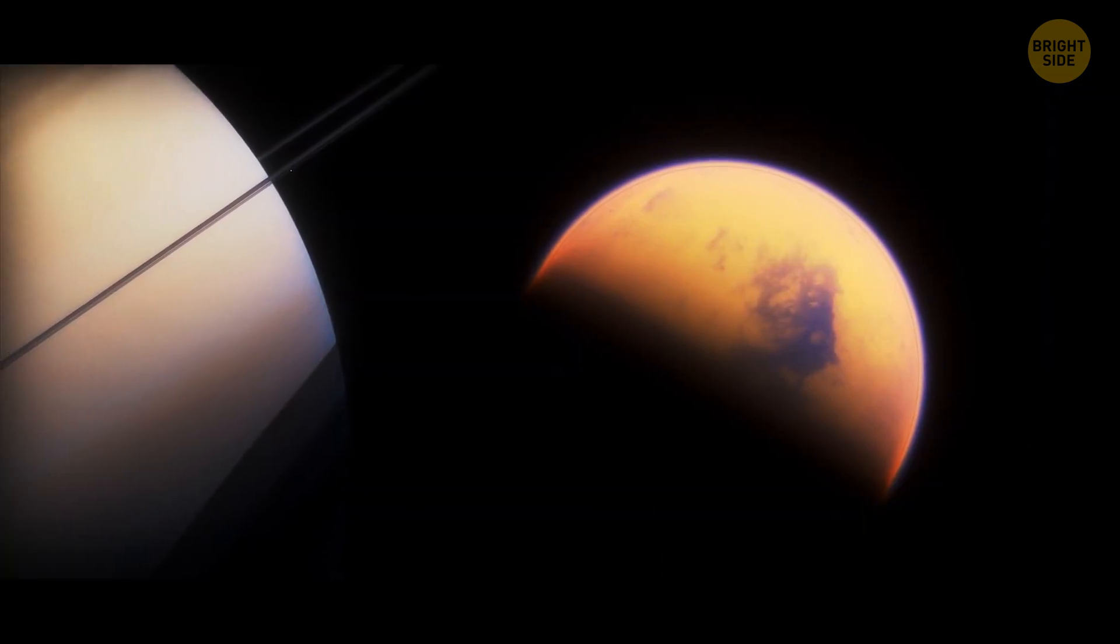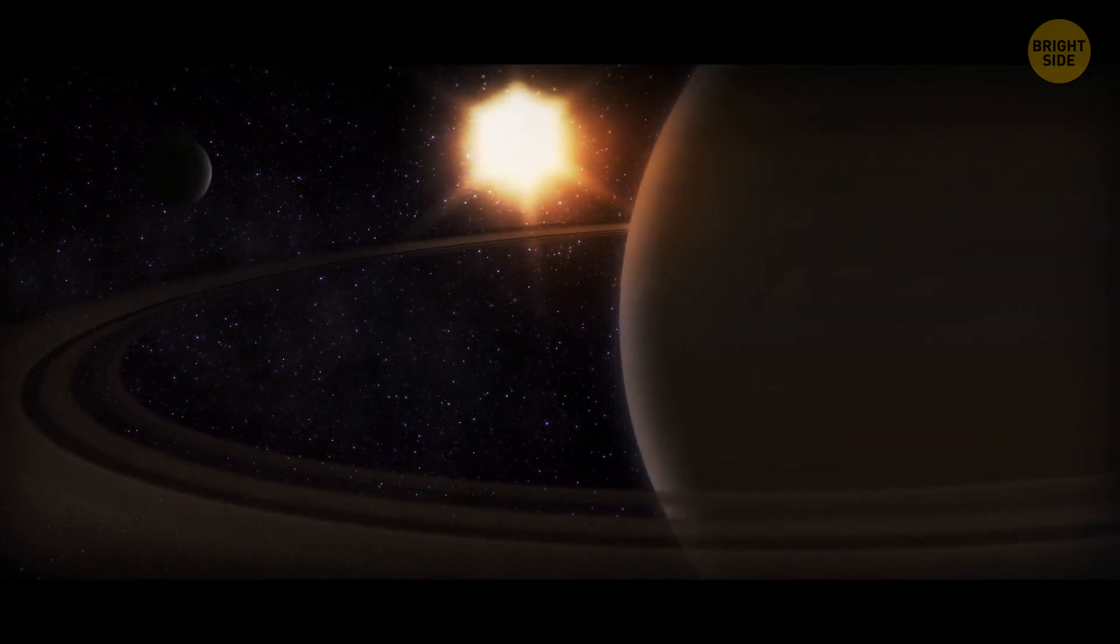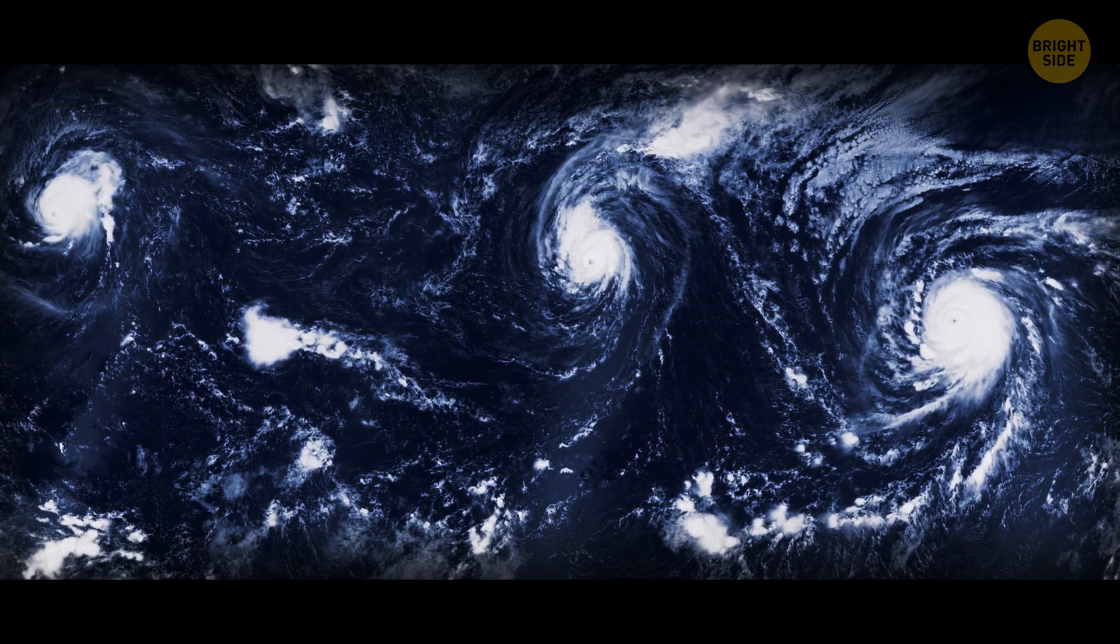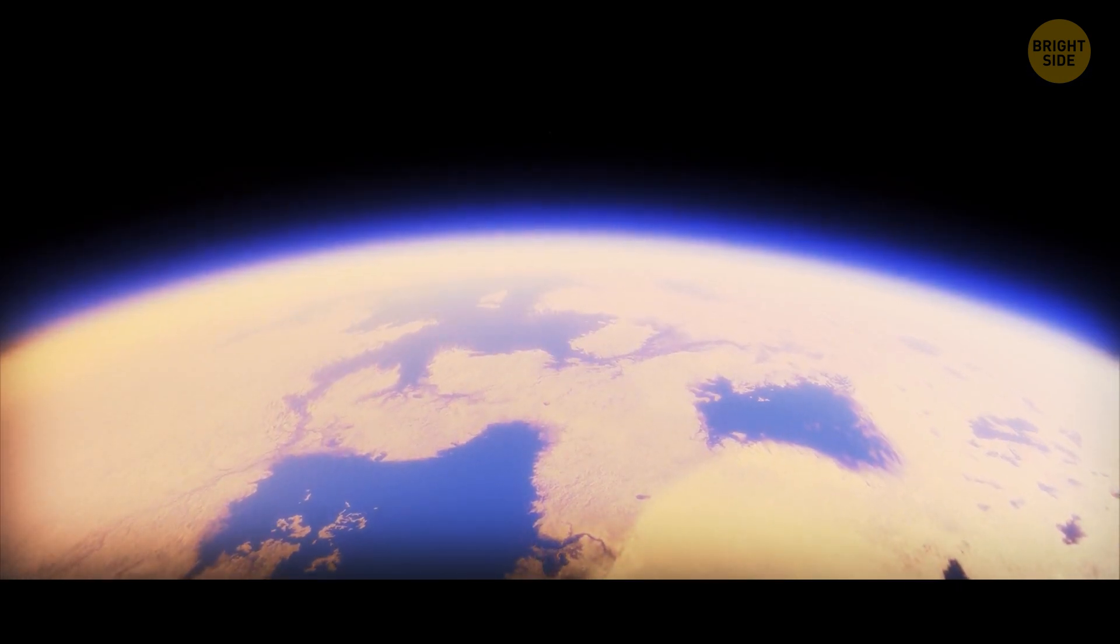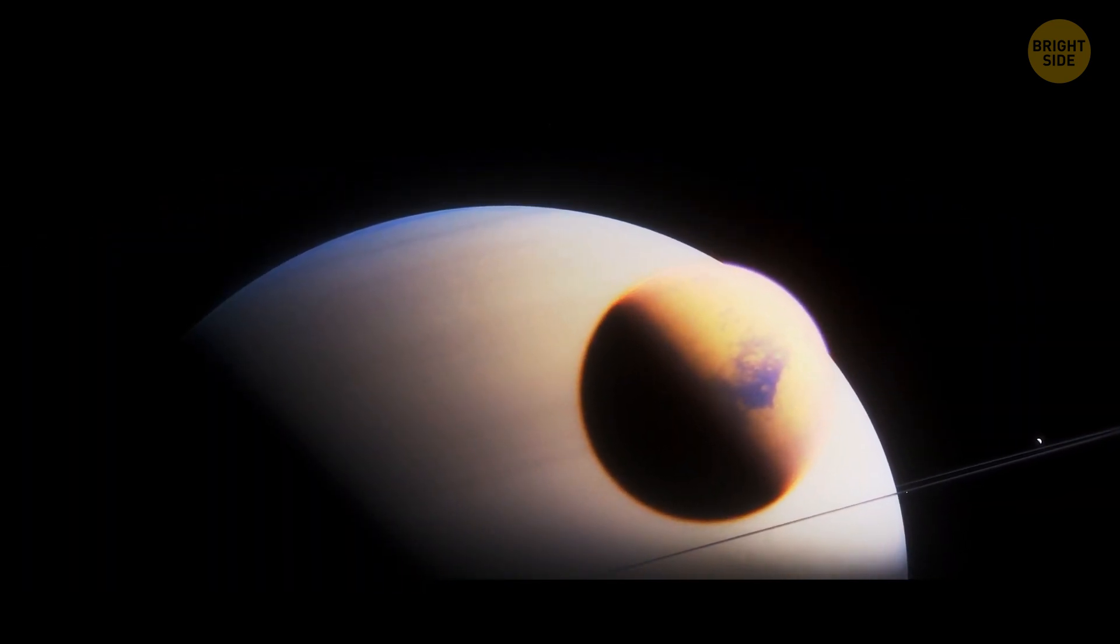Titan, the biggest of Saturn's moons, also has a liquid cycle, but it's not water. Its cycle moves materials between the surface and the atmosphere. At first, it sounds like the water cycle we have on Earth, but immense lakes on Titan are filled with ethane and methane. There's a chance they're over a layer of water.